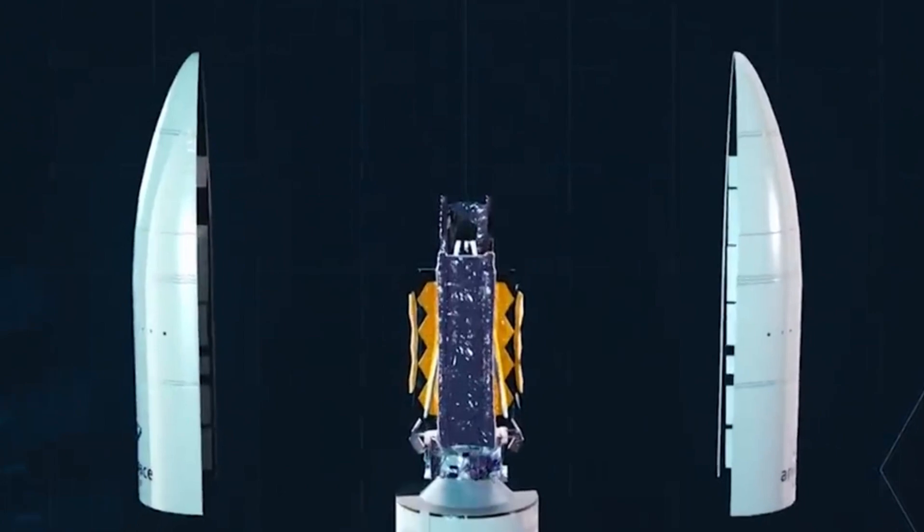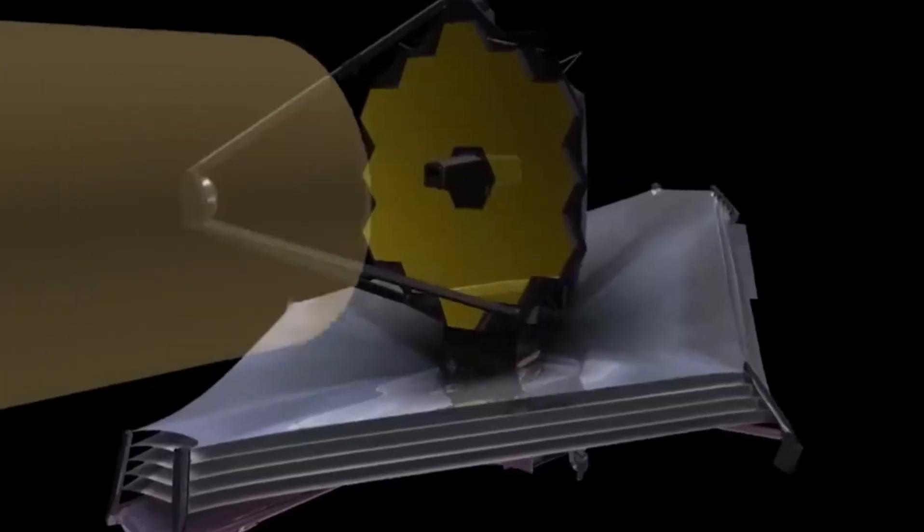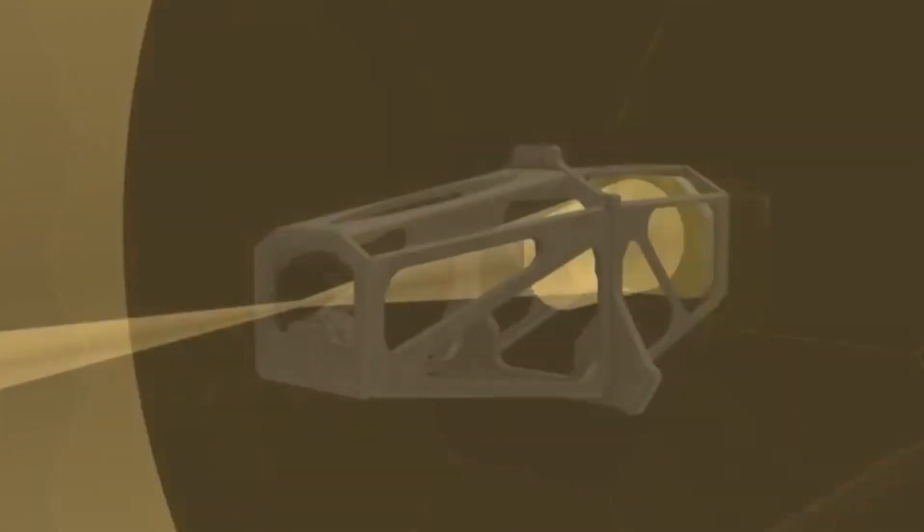Three minutes after liftoff, the rocket shed its first fairing, and ten minutes later, James Webb was propelled solely by its acceleration and the spacecraft adapter (SCA). After a final acceleration phase, the telescope separated completely, hovering in low-Earth orbit.